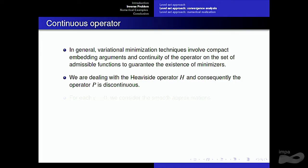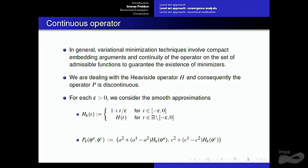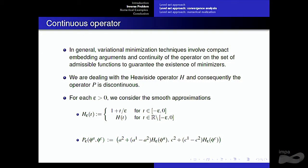In general, variational minimization techniques involve compact embedding arguments and the continuity of the operator on the set of admissible functions to guarantee the existence of minimizers. But here we are dealing with the Heaviside operator, which is discontinuous. So we define a smooth approximation: H_epsilon is the Heaviside function that is zero until minus epsilon, then grows from minus epsilon to zero up to one, and then stays at one. Once we have this smooth approximation, we use the operator P_epsilon, which is the same as P but with H_epsilon instead of H.